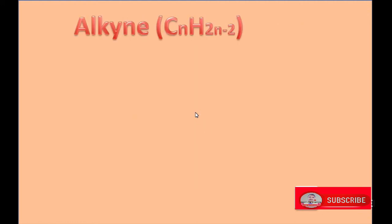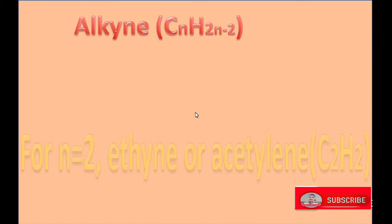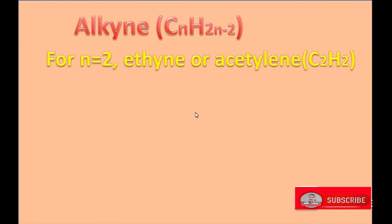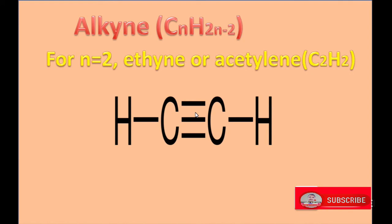Another unsaturated hydrocarbon series is alkyne, having general formula CnH2n-2. The first member of alkyne is for N equals 2, ethyne or acetylene, having molecular formula C2H2, because there is the possibility to form a triple covalent bond between two carbon atoms. In acetylene, there is a triple covalent bond between two carbon atoms, and hence these are called alkyne or unsaturated hydrocarbon.